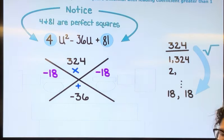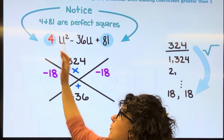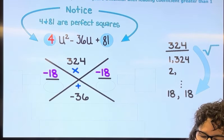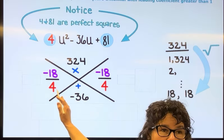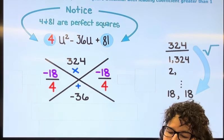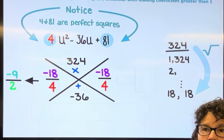Then over A, and the A here is 4. So I'm going to put the negative 18s over 4. Simplify. These are both even. So dividing the numerator and denominator by 2, I get negative 9 over 2.